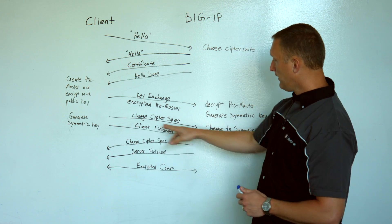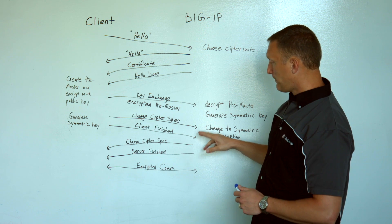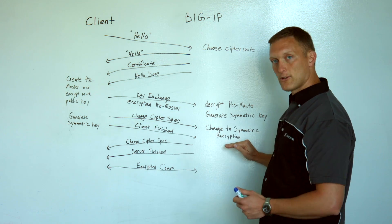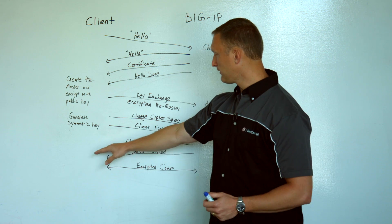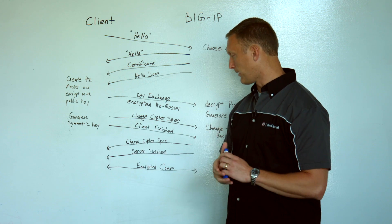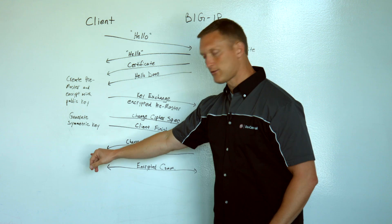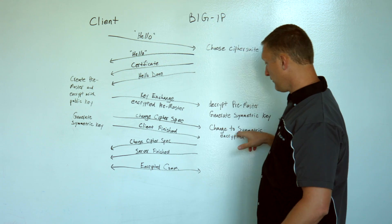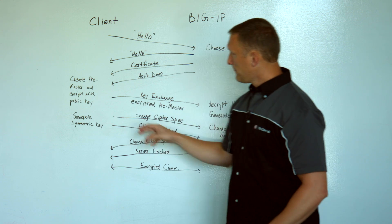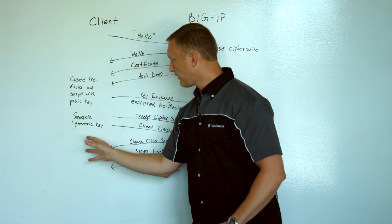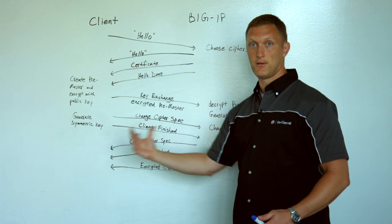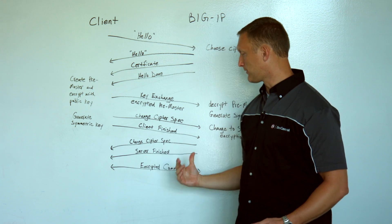Over here on the server side, he gets the client finished message, so he knows the client's done now and has also changed to symmetric encryption. So he's going to send the client back a change cipher spec message and then a server finished message as well. This is encrypted, by the way, with this new symmetric key. Once the client can decrypt that and understands, hey, now we're talking with the same shared key for symmetric encryption.